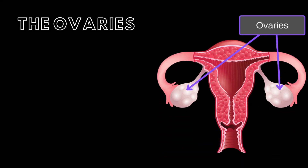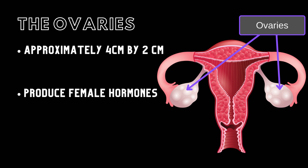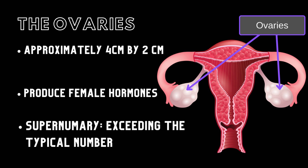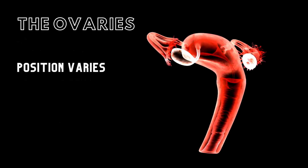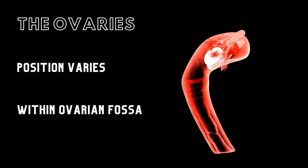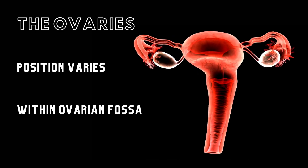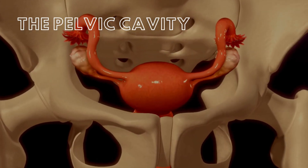Firstly, let's talk about the incredible anatomy of the ovaries. These small, paired organs within the female pelvic cavity play a vital role in reproductive health. Although rare, some individuals are born with just one ovary, and a select few even have a supernumerary ovary. The position of the ovaries is variable, especially during pregnancy, but each ovary is located within an ovarian fossa — depressions of the posterior lateral aspects of the pelvic cavity, with each ovary located on each side.